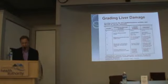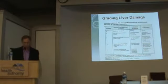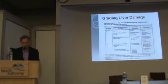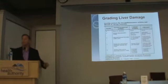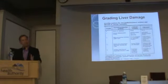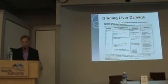This is what's called the Metavir score. There's grade zero, one, two, three, four — and it looks at how bad the damage is. Four is cirrhosis. There's cirrhosis and there's decompensated cirrhosis — in other words, very advanced.